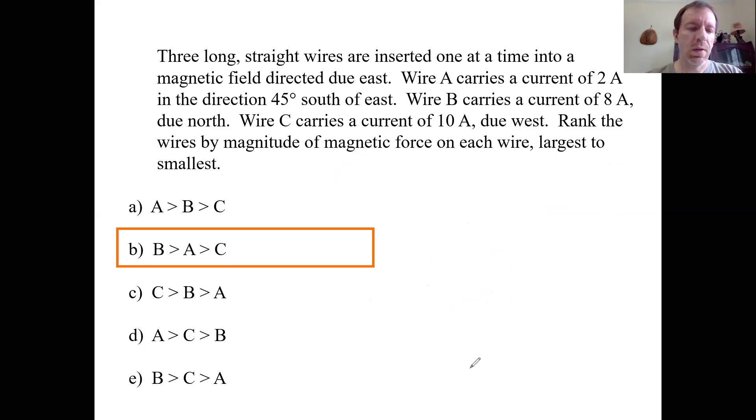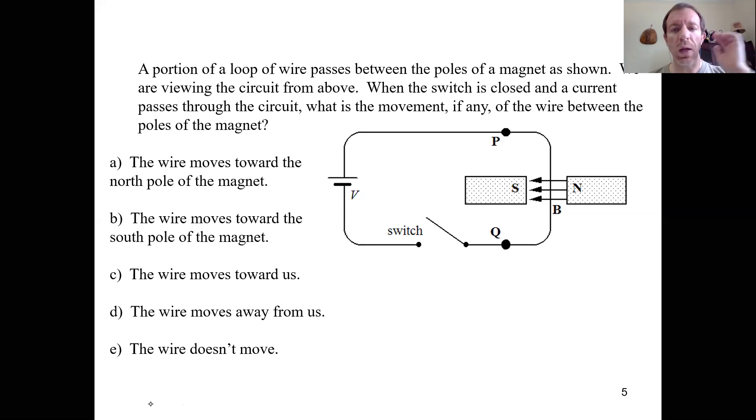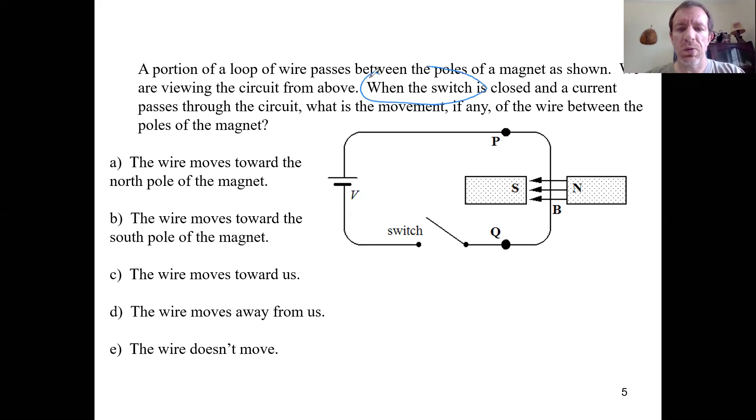All right. So let us see. Let us see what's next. All right. So on this one, what do we have? We've got basically a loop of wire and that wire has at least part of it passes through a magnetic field. And we've got a North pole and a South pole somehow. And of course, magnetic field always starts on North poles, goes towards South poles. So the magnetic field is directed to the left. And what does it say here? It says, and maybe I should circle where I'm reading. It says when the switch is closed. So there's a switch right there. When the switch is closed and the current passes through the circuit, what is the movement of the wire between the poles of the magnet?